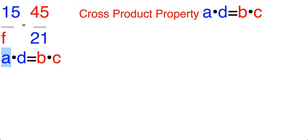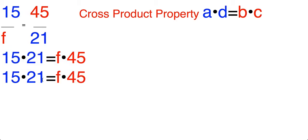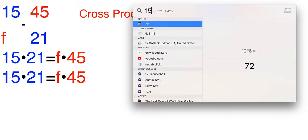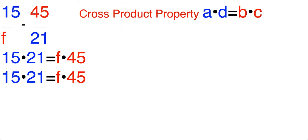Here I'm taking 15, multiply that by 21. And then I will take F and multiply by 45. So when we simplify this equation, 15 times 21 is 315. This would turn into 315. And F times 45 can just be written as 45F.